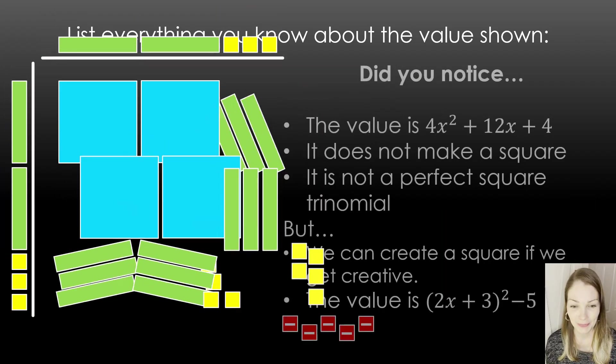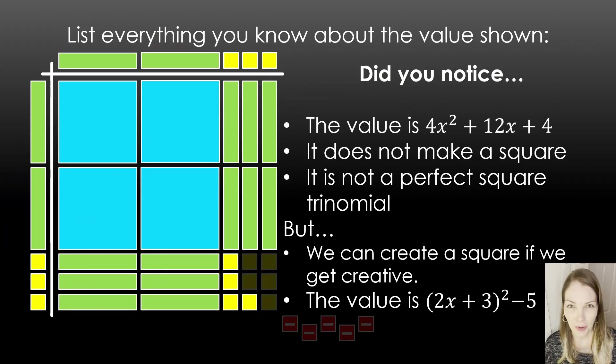Okay, here we go. All right, so you may be saying, whoa, what'd you do there? Mine did not come out that way. So let me explain. We have this value of 4x squared plus 12x plus 4. It doesn't make a square, not a perfect square trinomial, but it can almost make a square. It was just missing some pieces, right?